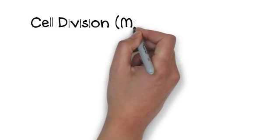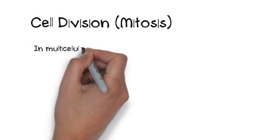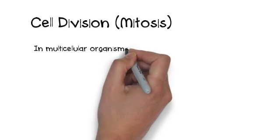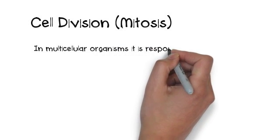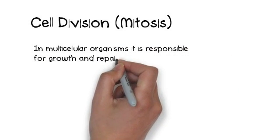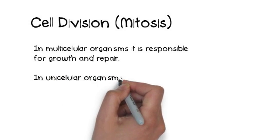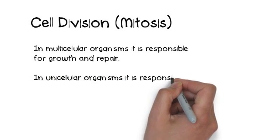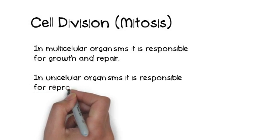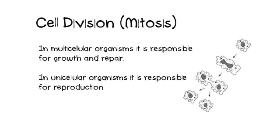We talked about how cell division is involved in both asexual and sexual reproduction. I want to clarify the role of cell division in each. In multicellular organisms, their cells don't just get so big that they grow with you — they're actually responsible for growth and repair. Each time you grow, you're making more cells, not bigger cells. In unicellular organisms, cell division is responsible for asexual reproduction.